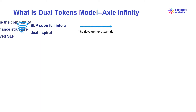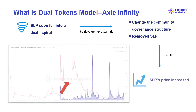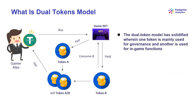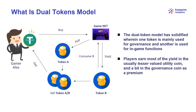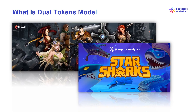The Axie team responded by changing the community governance structure to become more decentralized. They also removed SLP as the game's PvE — player versus environment — yielded earnings on February 9th to reduce SLP's mint and supply. With these changes, SLP's price increased. The dual token model has solidified wherein one token is mainly used for governance — owning more allows the holder more voting power — and another is the utility token used for in-game functions. In most games today, players earn most yield in the lesser-valued utility coin, and a bit in the governance coin as a premium, for example if they own valuable NFTs. Besides Axie, several other popular game fi projects such as Binarix and Starsharks also use the dual token model.